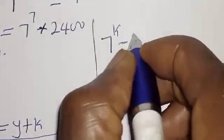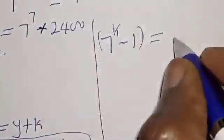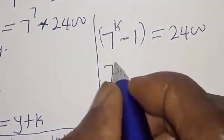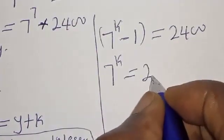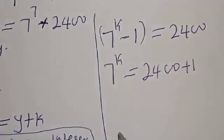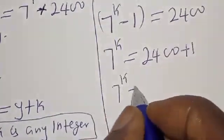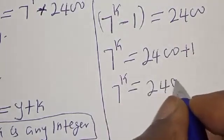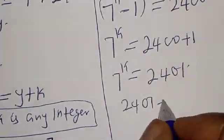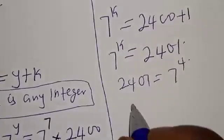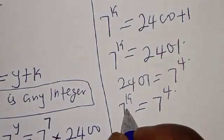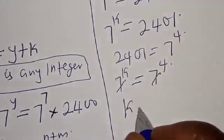For the second case: 7 raised to power k minus 1 equals 2400, so 7 raised to power k equals 2401. Since 2401 equals 7 raised to power 4, we have 7 raised to power k equals 7 raised to power 4, therefore k equals 4.